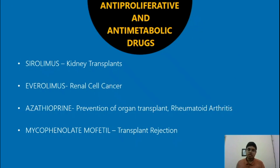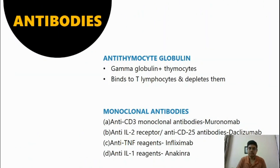Now we come to the anti-proliferative and anti-metabolic drugs, some of which are sirolimus, everolimus, azathioprine and mycophenolate mofetil. Sirolimus is used in kidney transplantation. Everolimus is used in renal cell cancer. Azathioprine is used in prevention of organ transplantation and also in rheumatoid arthritis. Mycophenolate mofetil is used in transplant. Presently, a wide variety of monoclonal and polyclonal antibodies are being used for prevention and treatment of transplant rejection.